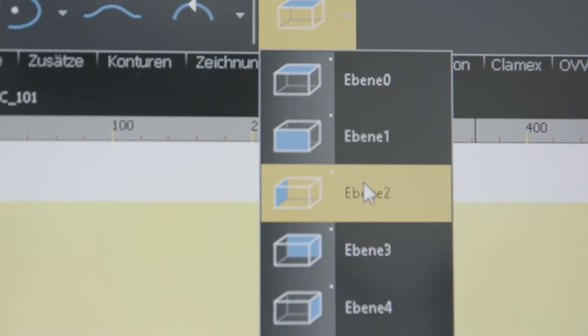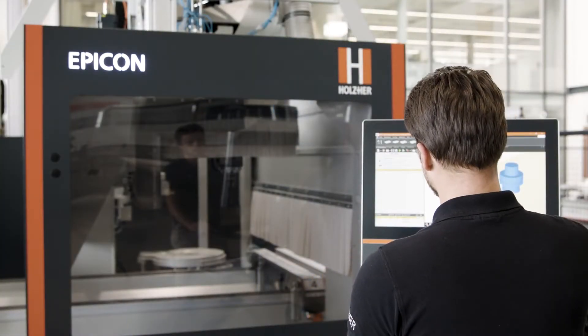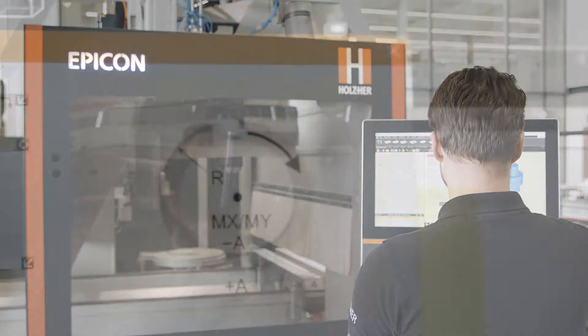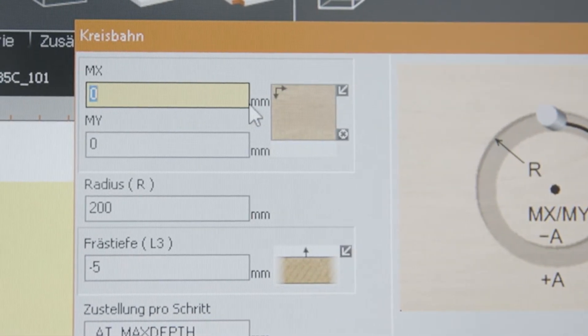Regardless of whether you are manufacturing components for furniture production or structural elements such as doors, with just a few clicks, you can generate fully parametric machining programs thanks to Campus NC Hops.